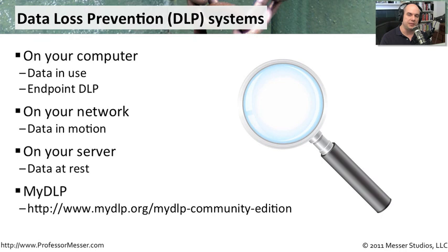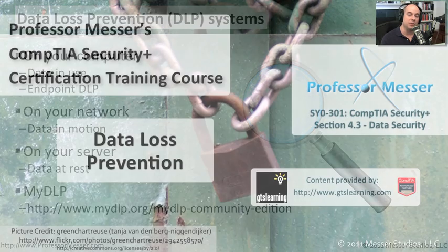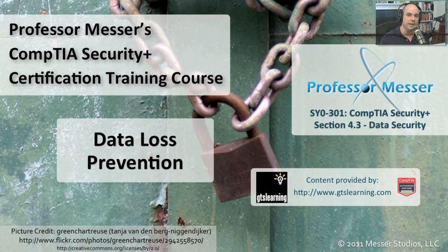If you wanted to try some of this yourself, there is a product called MyDLP. There's a free community edition — you could load up MyDLP on your computer and watch for traffic going across your network to see if you happen to see any credit card numbers, social security numbers, or any other type of string you set up. As you can see, DLP systems are becoming much more important as the data going across our networks and stored on our servers is becoming much more valuable.